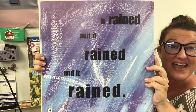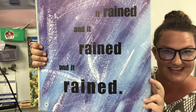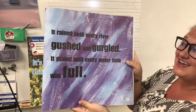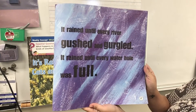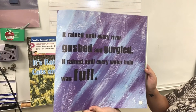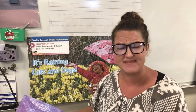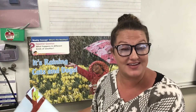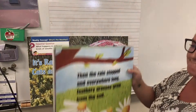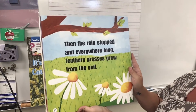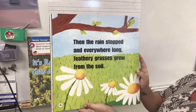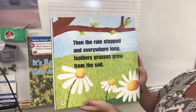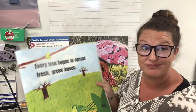It rained, and it rained, and it rained. And I see the punctuation mark here at the end of the sentence — the period. It rained until every river gushed and gurgled. It rained until every water hole was full. A water hole is a place like a pond that animals go to drink water.